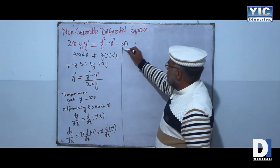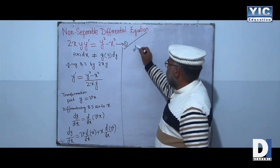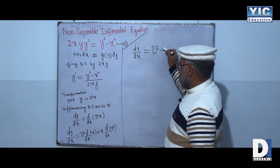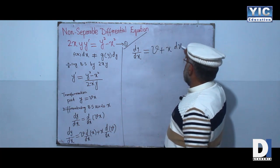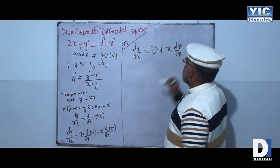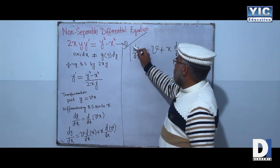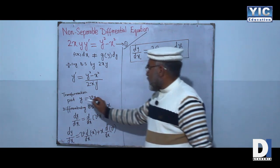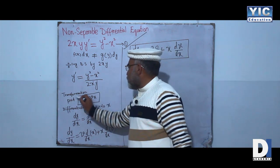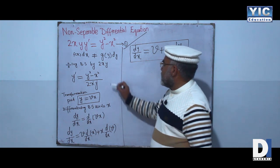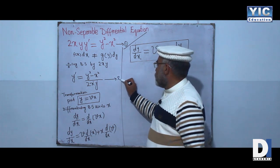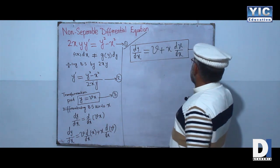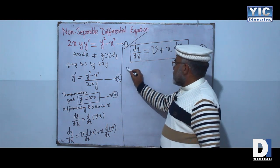So we can write this as dy/dx = v + x(dv/dx). This is our equation number two, y = vx is equation number three, and dy/dx = v + x(dv/dx) is equation number four.